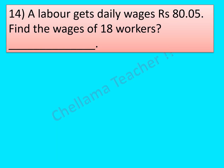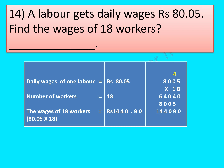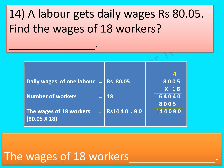Question No. 14: A labourer gets daily wages of Rs. 80.05. Find the wages of 18 workers. Daily wages of 1 labour = Rs. 80.05; number of workers = 18. Wages of 18 workers = 80.05 × 18. Since there are 2 decimal places, we place the decimal point 2 places from the right. So the wages of 18 workers is Rs. 1440.90.